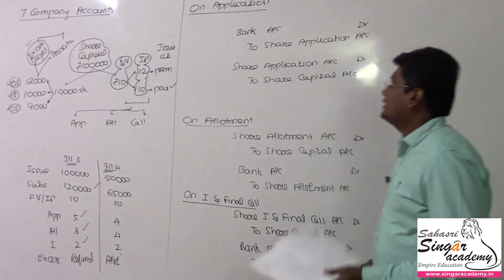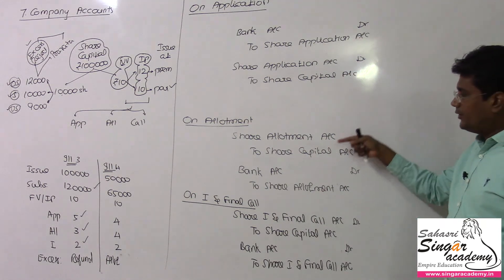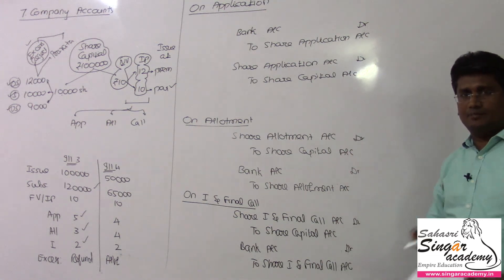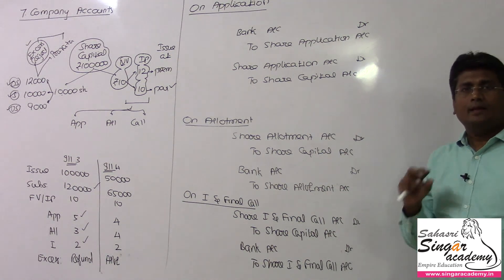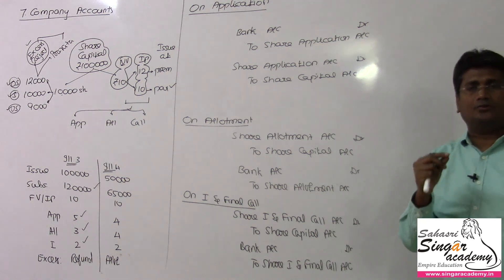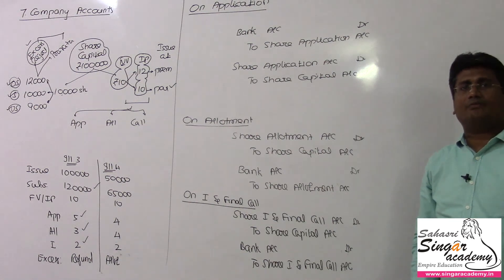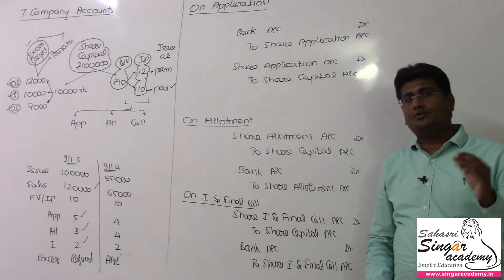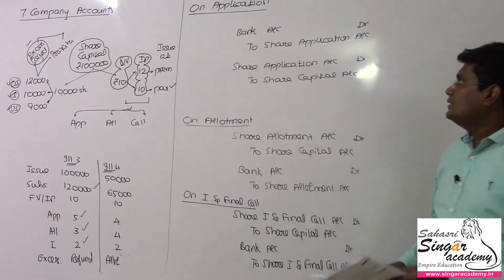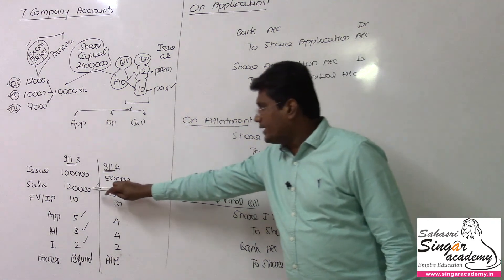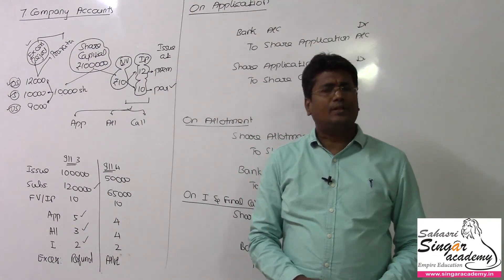We will see the application money received and transferred — due and collection entries. To share allotment and first and final call: the due entry first — share first and final call account debit to share capital account. For collection: bank account debit to share first and final call. So these are the entries.